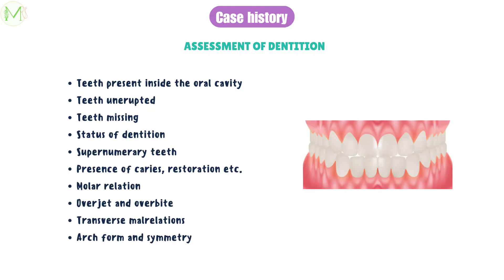Moving on to assessment of dentition. We need to check for the teeth present inside the oral cavity — the number of teeth, teeth which are unerupted, teeth which are missing, the status of dentition, supernumerary teeth if any, presence of caries, restorations, malformations, hyperplasia, wear, and discoloration. We also check molar relation, incisor relation, canine relation, overjet and overbite, transverse malrelations, arch form, and arch symmetry.